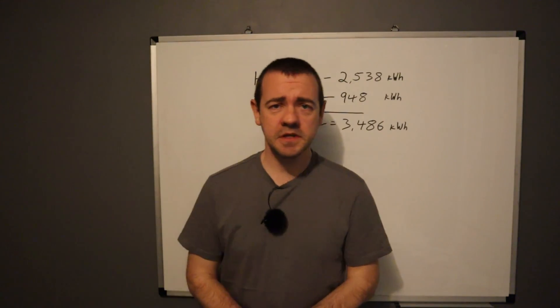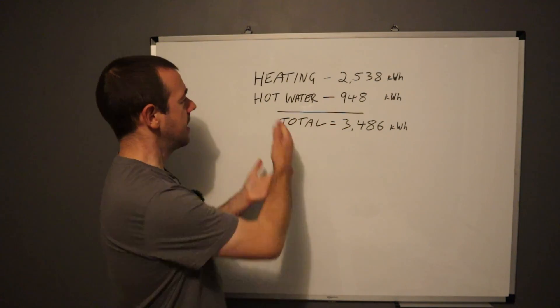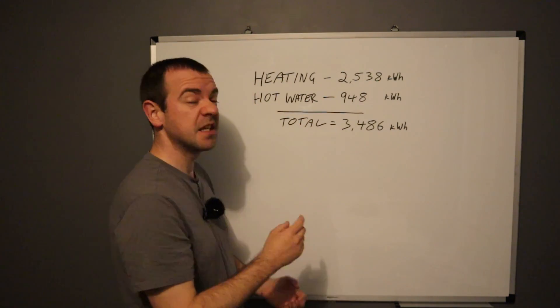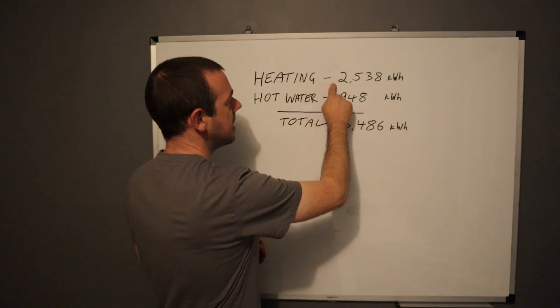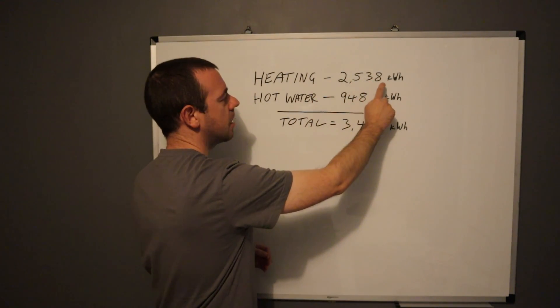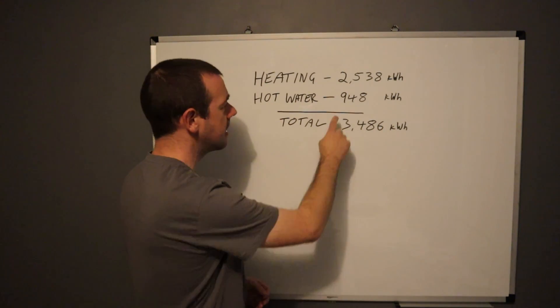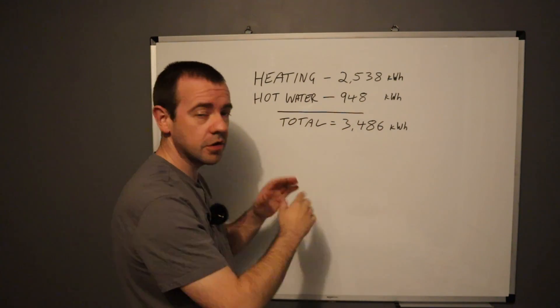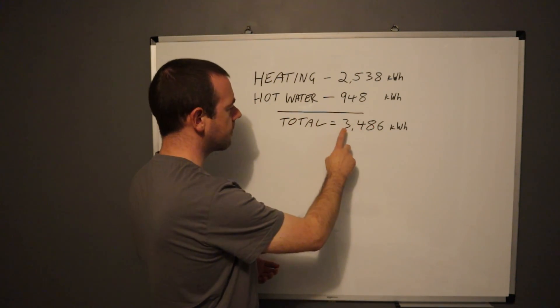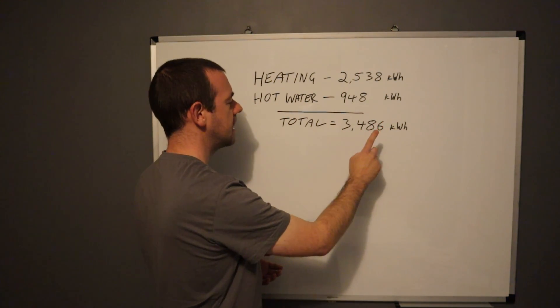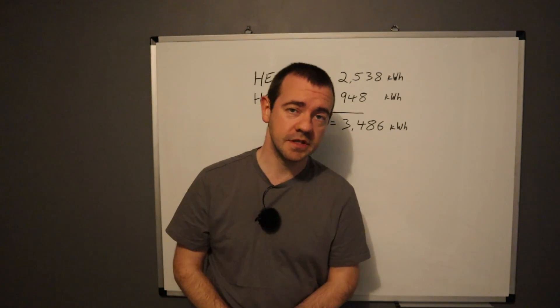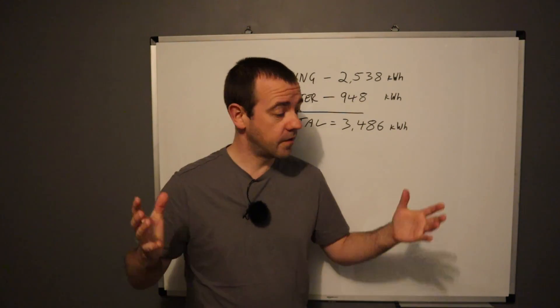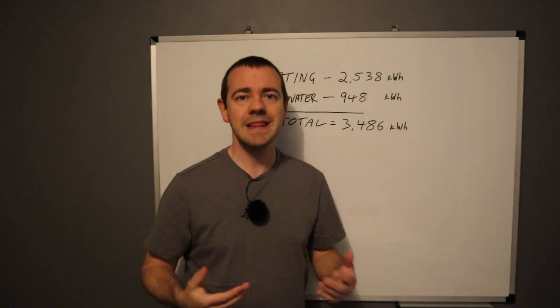It's back, the whiteboard is back, and this one's going to be fairly straightforward. The amount we've used for heating throughout the year - well, it's actually a year and two weeks, but I'll ignore that - is 2,538 kilowatt hours worth of electricity for the heating, 948 kilowatt hours for the hot water throughout the year, giving us a grand total of 3,486 kilowatt hours worth of electricity for twelve months, and two weeks, worth of heating and hot water in this house.